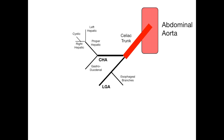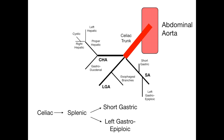Now let's do our third branch, the splenic artery, abbreviated SA. There are two branches you need to know that come off the splenic artery: the short gastric artery and the left gastroepiploic artery. That's all you need to know about the splenic artery. So the celiac trunk at T12 gives rise to the splenic artery, and the splenic artery gives rise to the short gastrics and the left gastroepiploic.